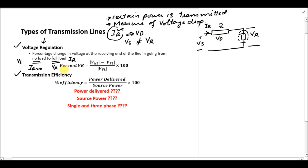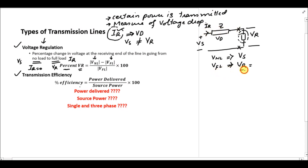Using the formula for percentage voltage regulation, there are two terms: one in the numerator and one in the denominator. In the numerator we have V no load minus V full load. V no load will be equal to VS because if there is no load attached, whatever the voltage is at the sending end will also be at the receiving end. V full load will be equal to VR because in this case the load is attached and current IR is flowing. So for the short transmission line, the formula for percentage voltage regulation will be (VS minus VR) over VR, multiplied by 100.